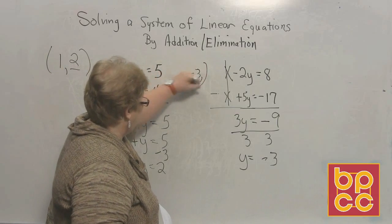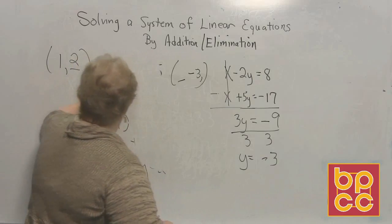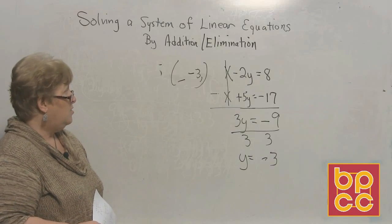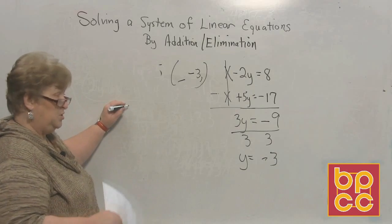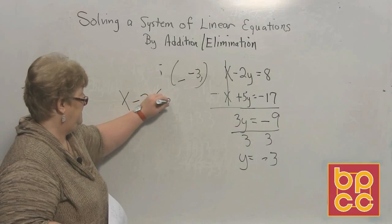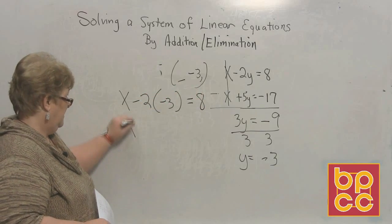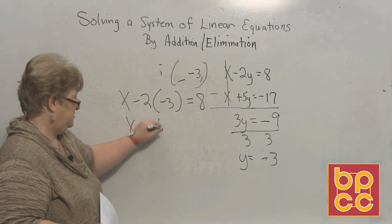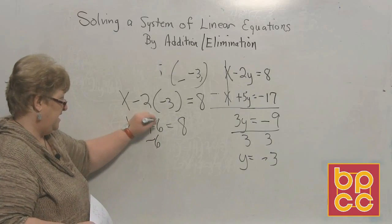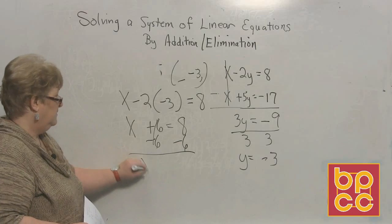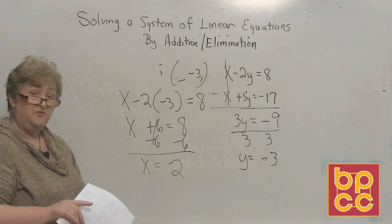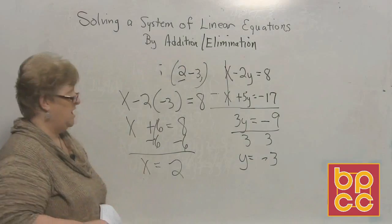So y is negative 3, and we'll come back and fill in what x is. If y is negative 3, I can pick whichever equation I want. I'll pick the top one. When I get to y, I put negative 3: x minus 2 times negative 3 equals 8. Negative 2 times negative 3 is positive 6, equal to 8. Moving the 6 to the other side by adding the opposite, x equals positive 8 minus 6, which is positive 2. So the answer is (2, negative 3).